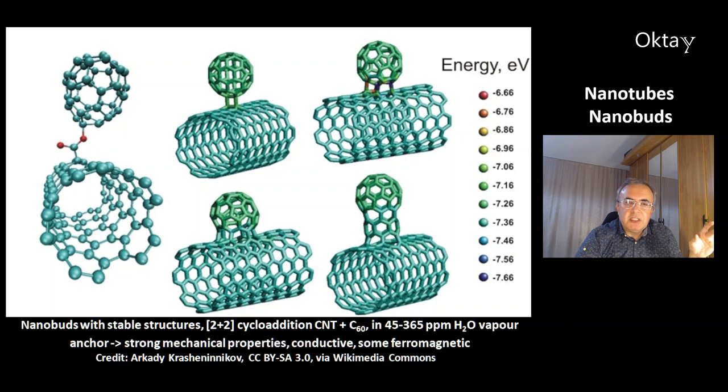This is a picture of nanobuds with stable structures. They are made by 2 plus 2 cycloaddition of carbon nanotubes and fullerene C60 football molecules. For this you need water vapor at a concentration of 45 to 365 parts per million. This anchor gives the nanobuds strong mechanical properties. You can make nanobuds that are conductive and some are ferromagnetic.